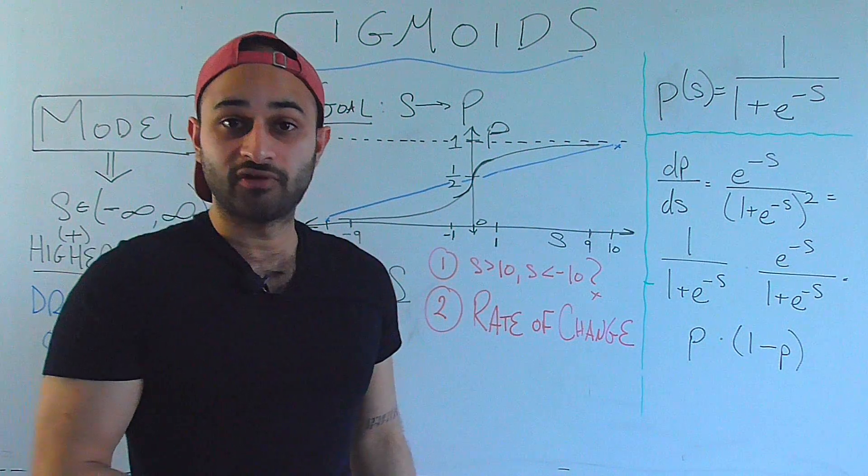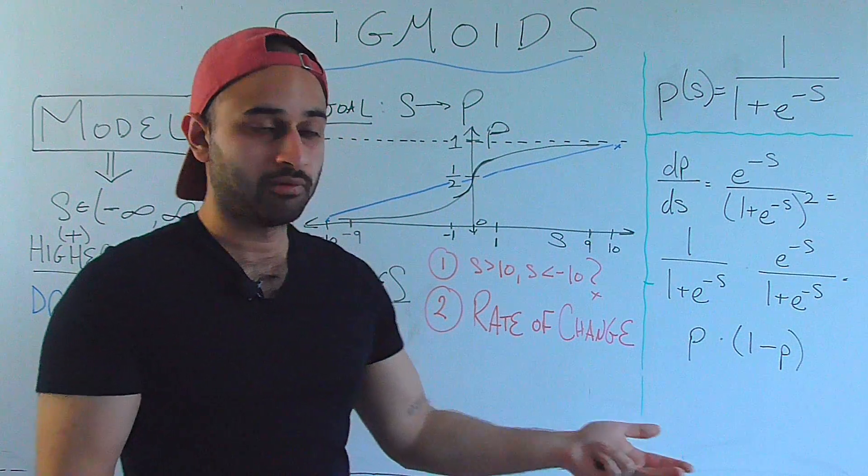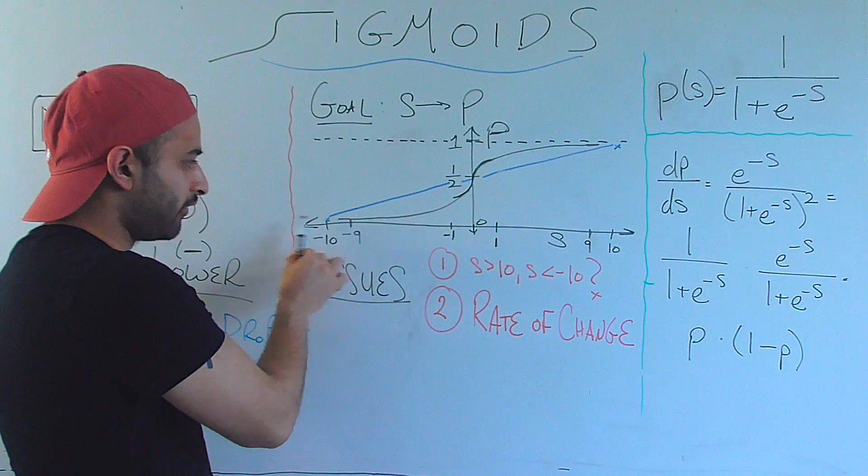If s were equal to negative infinity, the denominator goes to infinity, so the entire fraction goes to 0, which is exactly what we want on this end.